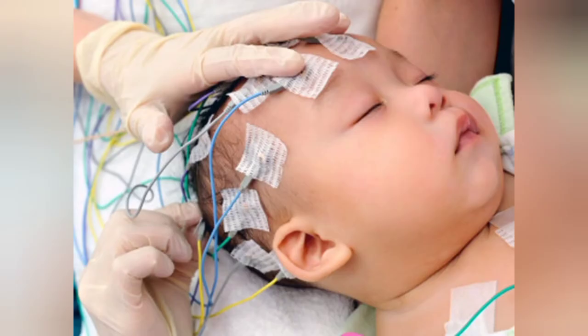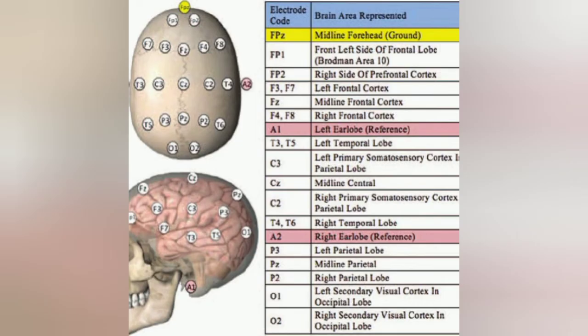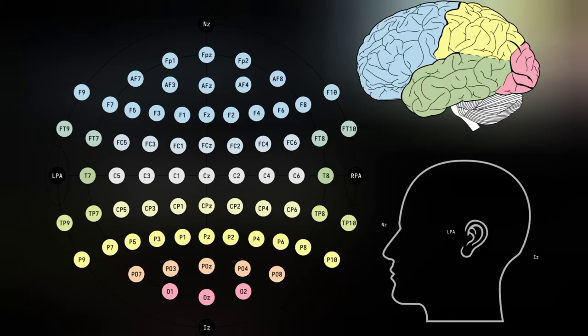The technician applies some gritty cream on the spots for electrodes for better quality signals and then attaches electrodes on the scalp using a special adhesive. Every electrode attached to the scalp has its own fixed position. This fixed positioning confirms which wave is coming from which compartment of the brain.